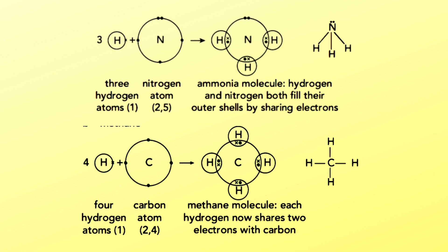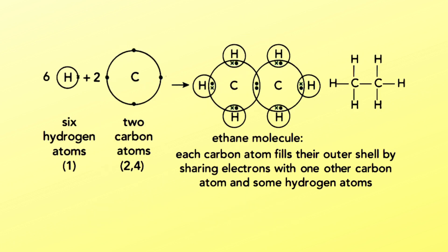In ammonia (NH₃), hydrogen and nitrogen both fill their outer shells by sharing electrons. Another example is methane, where each hydrogen shares two electrons with carbon. In ethane, each carbon atom fills its outer shell by sharing electrons with one other carbon atom and some hydrogen atoms.